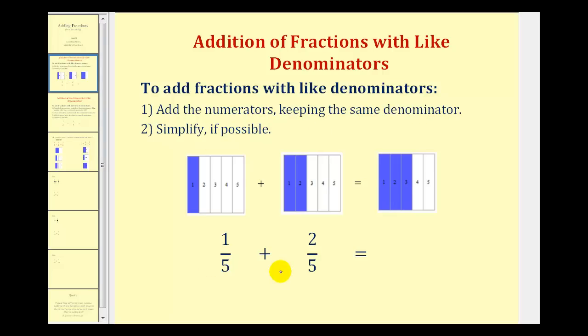So for one-fifth plus two-fifths, the denominator is going to stay five, and then we add the numerators. Since one plus two is equal to three, this sum is three-fifths.